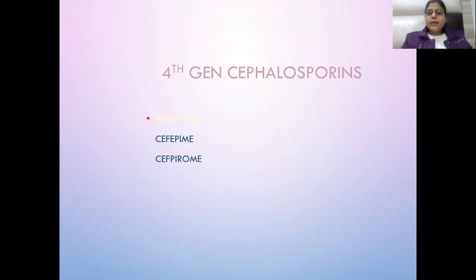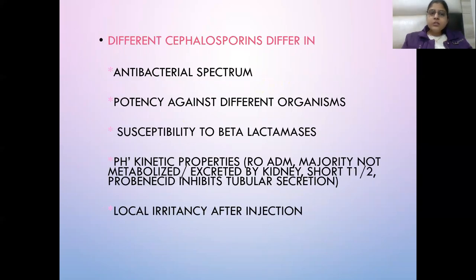Fourth generation drugs have 'PIE' in their name: Cefepime and Cefpirome — these are parenteral. The difference between generations lies in their antibacterial spectrum, potency against different organisms, and susceptibility to beta-lactamases. The majority are not metabolized and are excreted by the kidney. Probenecid inhibits tubular secretion, giving a shorter half-life. Local irritancy after injection can occur.